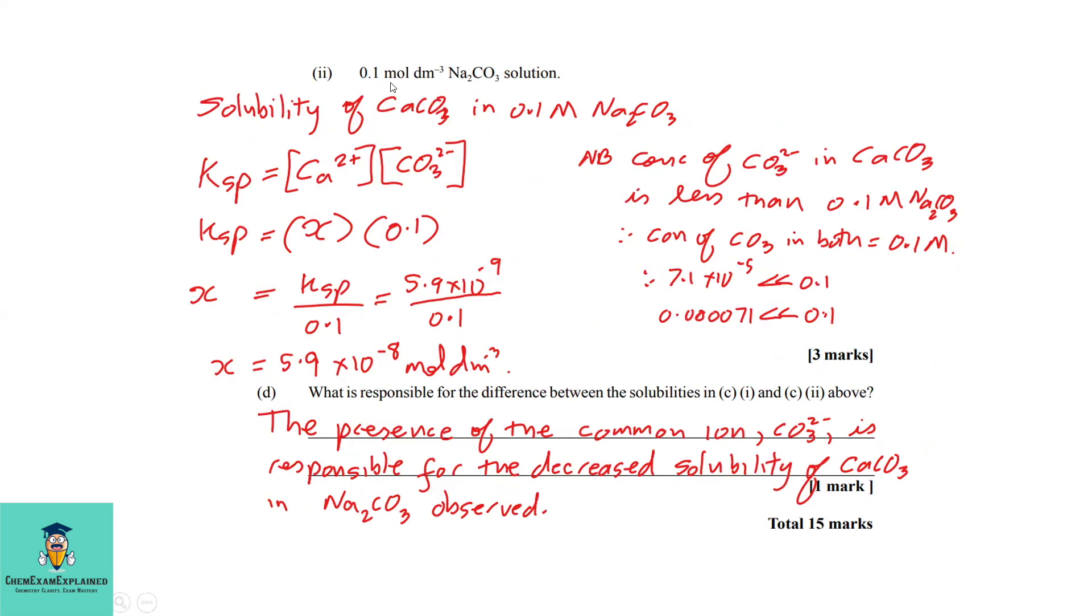Part c2: They want to find the solubility of the saturated solution if 0.1 mol/dm³ sodium carbonate solution was added. We have the solubility of the sodium carbonate added to the calcium carbonate saturated solution. What you should notice is that the sodium carbonate contributes a common ion to the saturated solution of calcium carbonate, and that common ion should cause the solubility of the calcium carbonate to decrease.